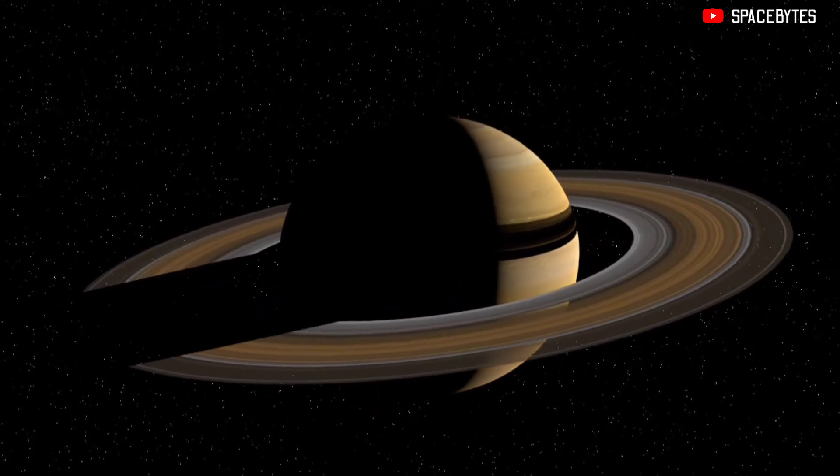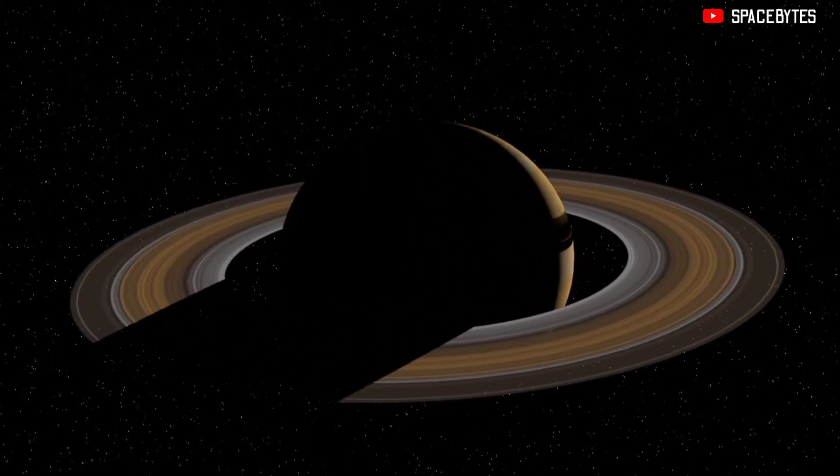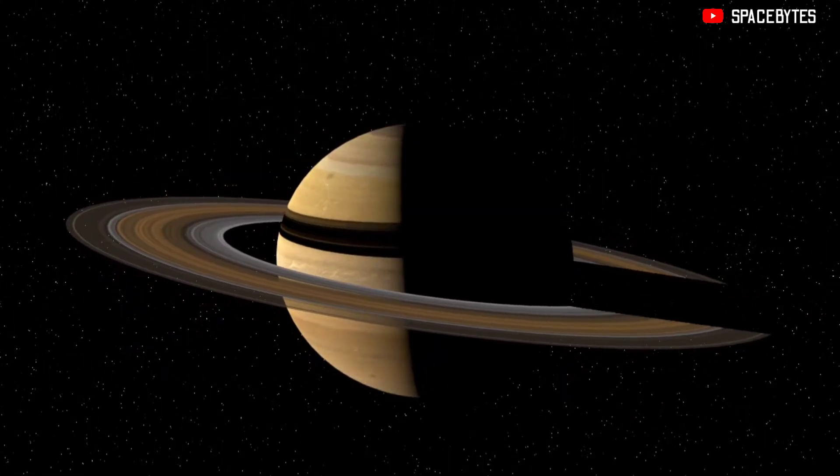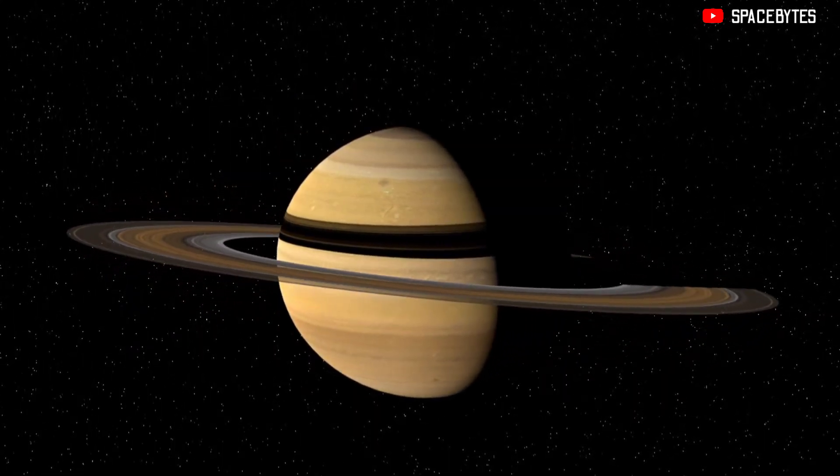Saturn is the second largest planet in our solar system after fellow gas giant Jupiter. Saturn is a massive ball made mostly of hydrogen and helium.